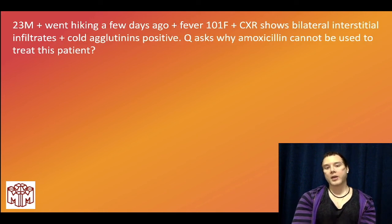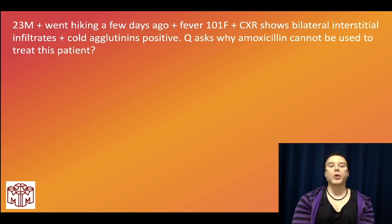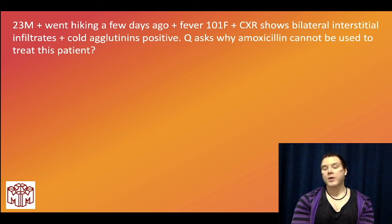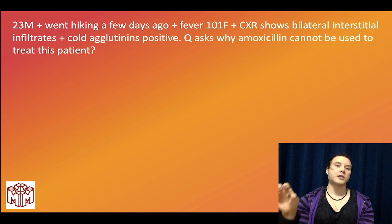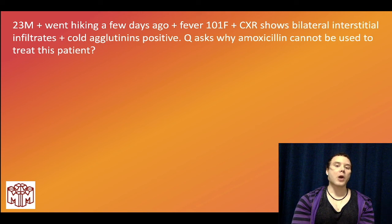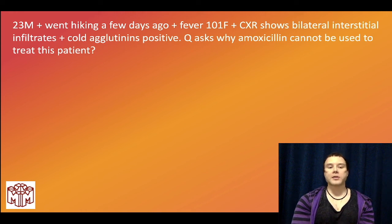23-year-old male went hiking a few days ago, fever 101, bilateral interstitial infiltrates on chest X-ray, cold agglutinins positive. Why can't amoxicillin be used? Diagnosis is Mycoplasma pneumoniae — most common bacterial cause of atypical pneumonia, can cause IgM antibodies against RBCs (cold agglutinins). We can't use amoxicillin because Mycoplasma does not have a peptidoglycan cell wall.